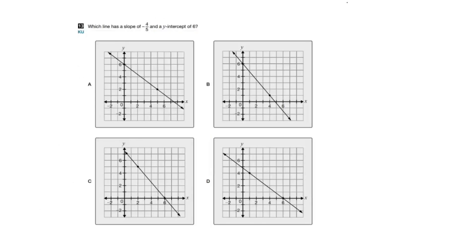We have a graph analysis question: which line has a slope of negative four over five and a y-intercept of six? The first thing I want to do is find the y-intercept — the point where x equals zero, or where the line intercepts the y-axis. For A, the y-intercept is indeed six — keep it. For B, it's also six — keep it. For C, it's not six — cross it out. For D, it's not six — cross that out as well. So we only need to calculate the slope for A and B.